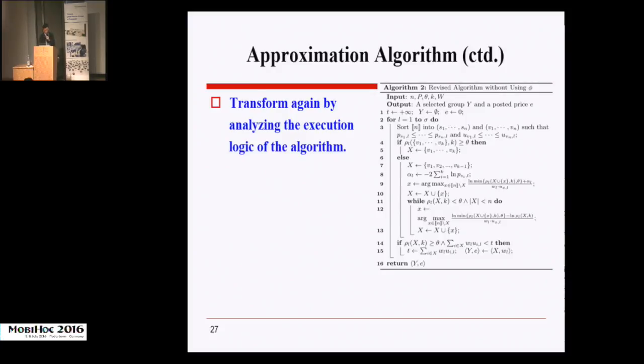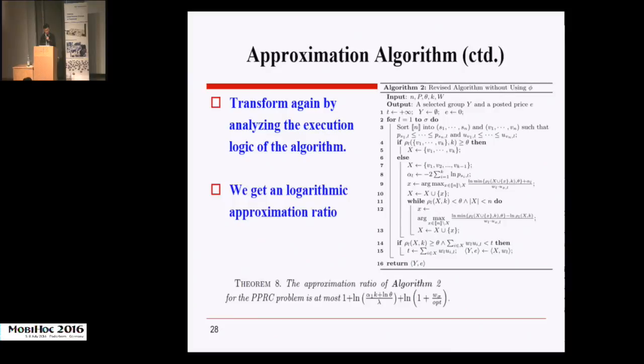So to get a better algorithm, we further transform Algorithm 1 into an equivalent Algorithm 2. This algorithm first adds K-1 users with the smallest expected cost into the result set. After that, the algorithm adds remaining users one by one; each time it selects a user that maximizes the ratio of its incremental contribution to its cost.